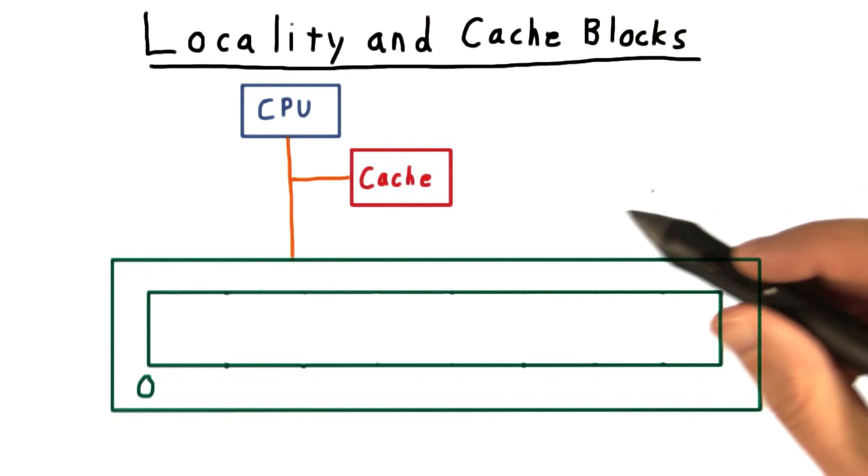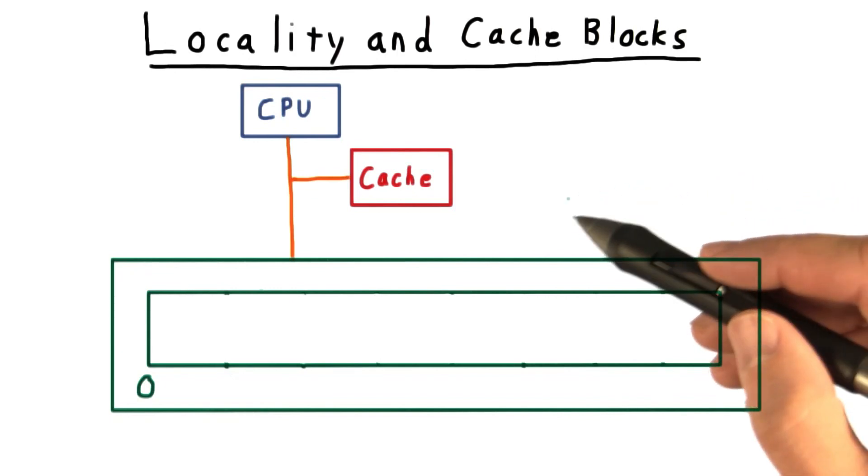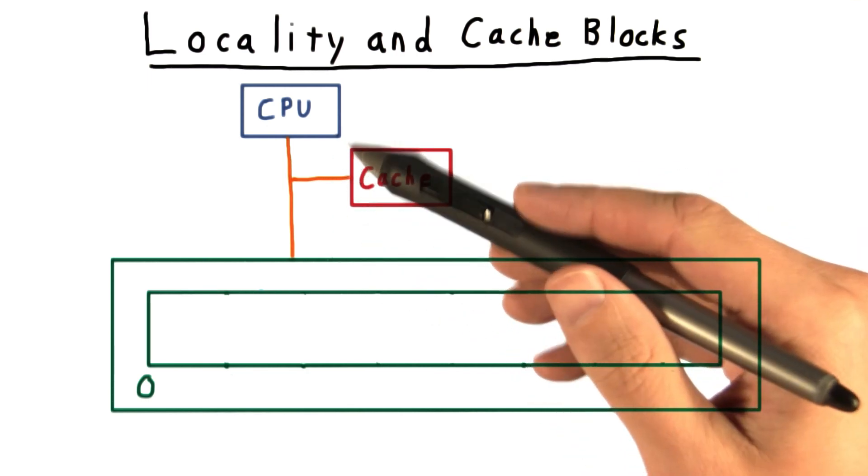As we've seen, in order for a cache to be effective, the hit rate must be high. That is, we need to be able to anticipate what data the process will need next.